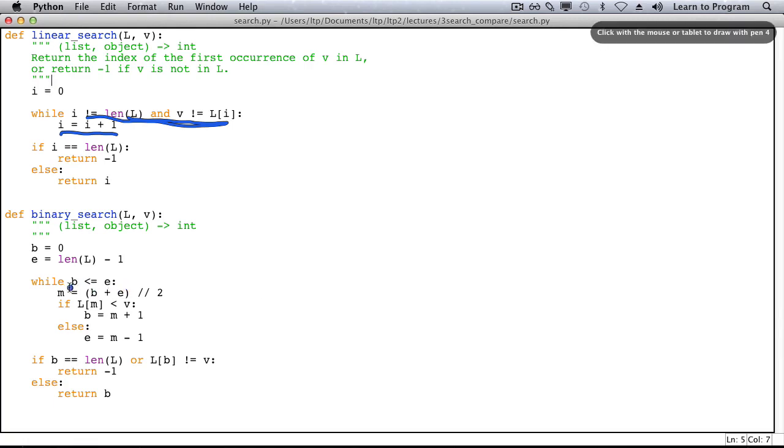In binary search we have a much simpler comparison but we'll still count it as just one. We have one assignment statement, a second comparison, and then the result of that comparison will lead us to one assignment statement or the other. So we have one comparison here, one assignment statement, another comparison, and then one of these is going to happen. So in binary search we actually have sort of four steps on each iteration of the loop.